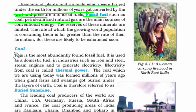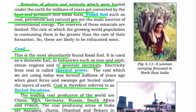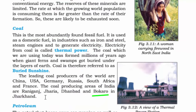Coal is found in abundance and is used in industries such as iron and steel. More importantly, we use coal to generate electricity, which is called thermal power. Coal is found beneath the earth's surface and is therefore referred to as buried sunshine. The leading coal producers of the world are China, USA, Germany, Russia, South Africa, and France. In India, coal is found in Raniganj, Jharia, Dhanbad, and Bokaro in Jharkhand — industries are also created close to the land of resources.